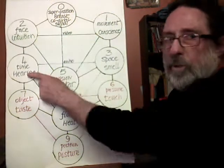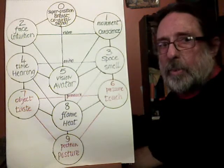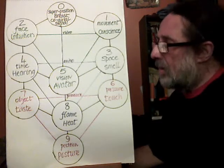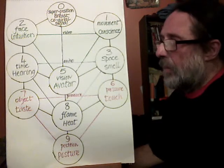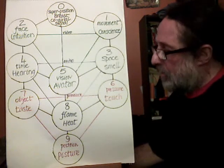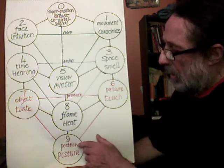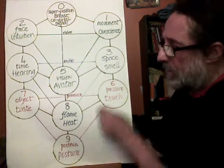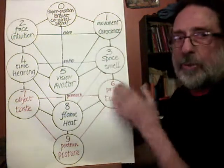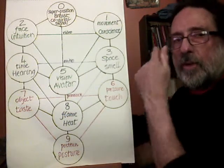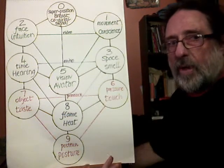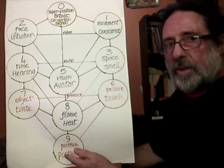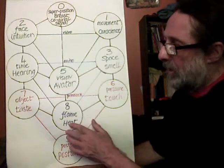The movement from time to time with the cycles of time — daily, monthly, yearly — just our appointments, our daily schedule. And then we have the movement of the objects in reality. These are the three levels: the movement of the attention, the movement of time from place to place, and the movement around in space and within the objects.